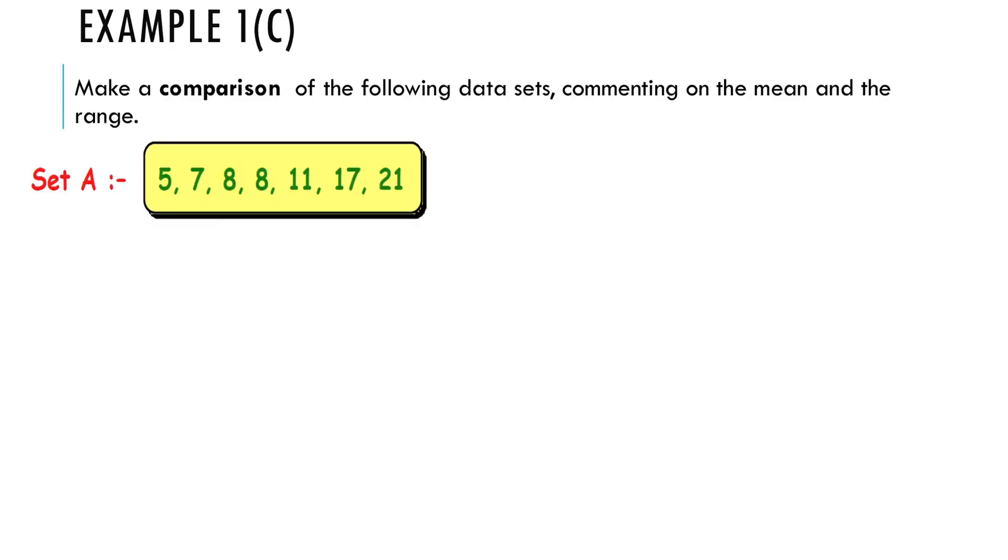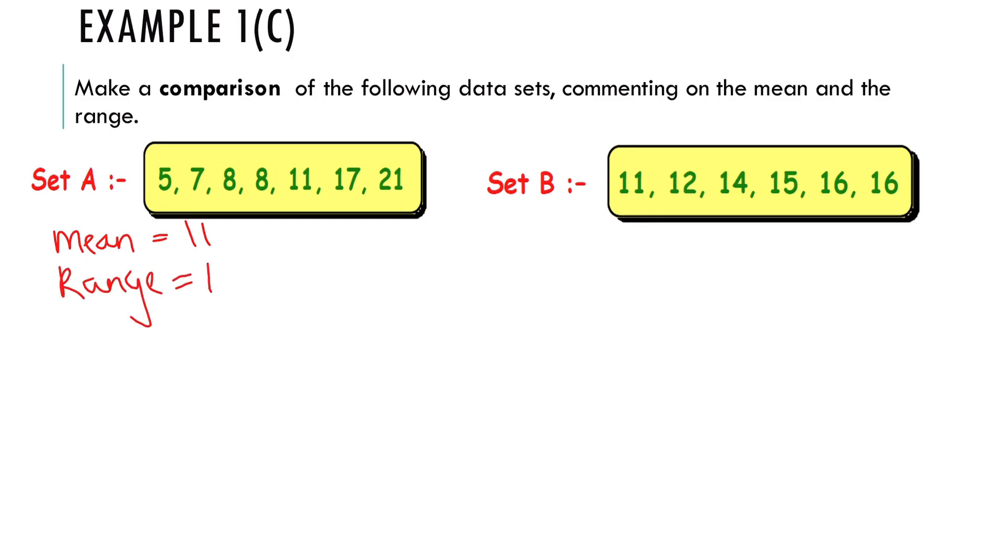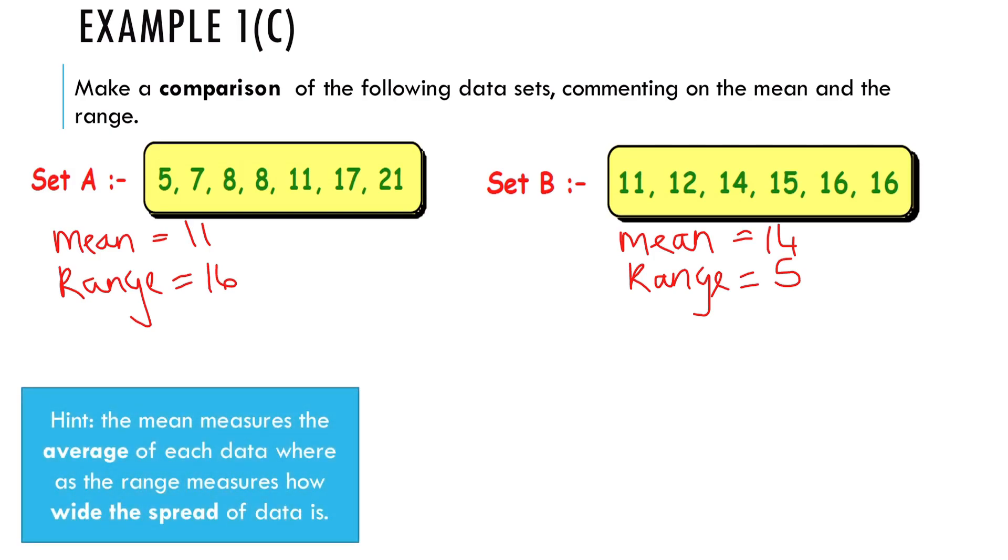In part C, it says make a comparison of the following data sets commenting on the mean and range. So let me first jot down what we got because we've already calculated the mean and range of these. The mean is 11, the range is 16. For the second one, the mean was 14 and the range was 5. So remember, the mean is a measure of average and the range is a measure of the spread of data. So we can see in the first one, the mean is lower than the second one, which means on average set B is higher than set A. So that is just my first statement. On average, set B is higher than set A since 14 is greater than 11.